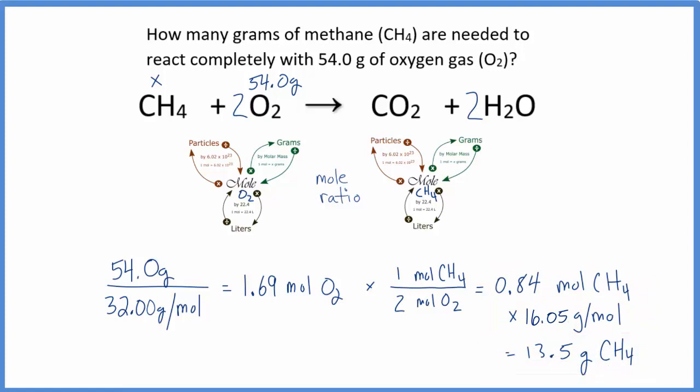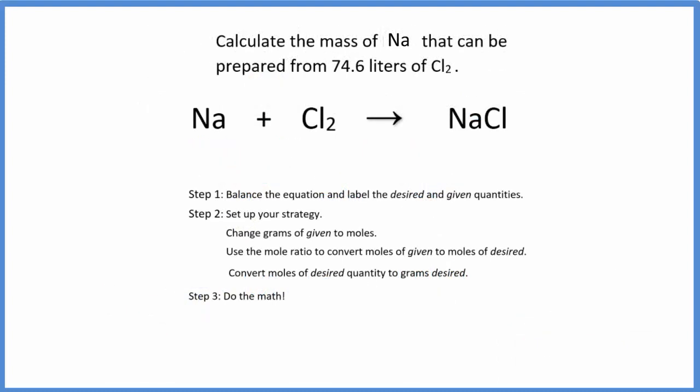Let's do another one. This time, let's start with liters. So let's balance the equation first. Now let's write what we're given, and we're given liters. So that's kind of new, but no problem. We have 74.6 liters of that chlorine gas, and we want to know the mass of the Na. So mass is going to be grams. So we want to figure out grams of the Na, of the sodium.